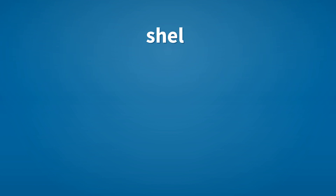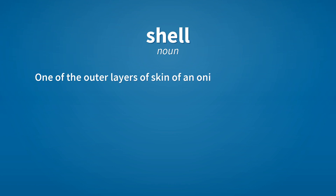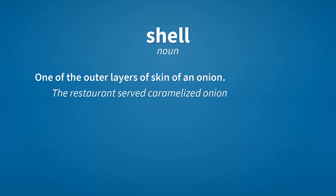Shell. Noun. One of the outer layers of skin of an onion. The restaurant served caramelized onion shells.